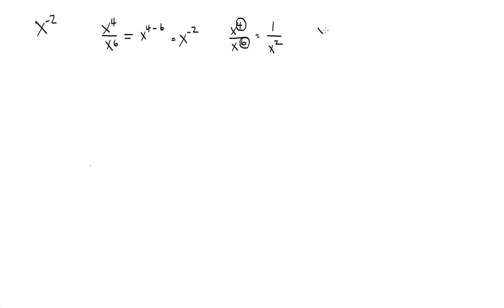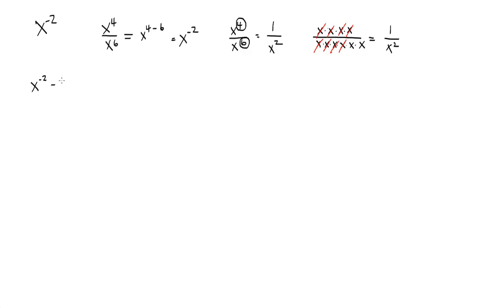We can also show that by writing out our x's. x to the fourth is x times x times x times x, and x to the sixth is six x's. If you have a factor that's the same top and bottom, you can cancel them. We cross out everything on the top, which leaves us with a 1, and on the bottom is x squared. So we've just shown a number of different ways to prove that x to the negative 2 is 1 over x squared.